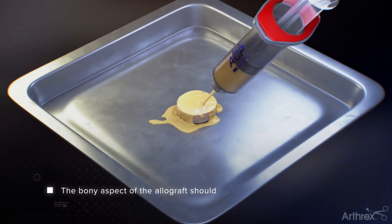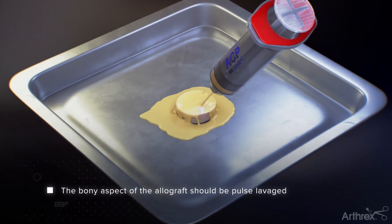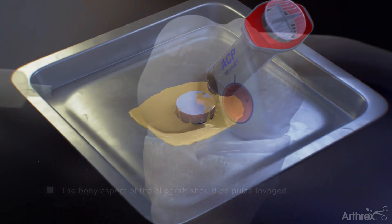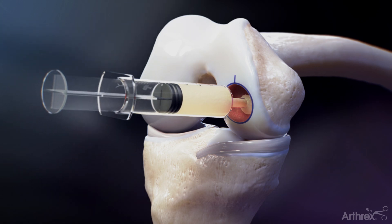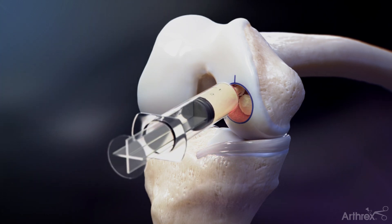The allograft bone may be soaked in autologous conditioned plasma prior to implantation. A thin layer of demineralized bone matrix, DBM, may be applied to the recipient socket to make slight adjustments as needed.